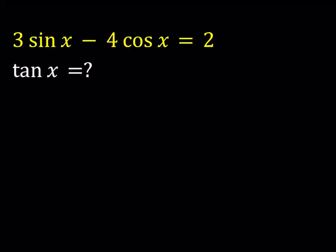Hello everyone. In this video, we're going to be solving a trigonometric equation. We have 3 sine of x minus 4 cosine of x equals 2, and we are supposed to find tangent x. I'll be presenting two methods here. Let's start with the first one.